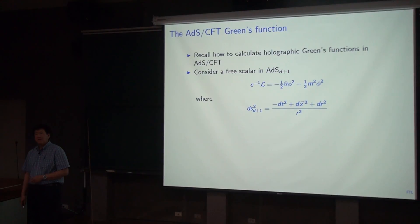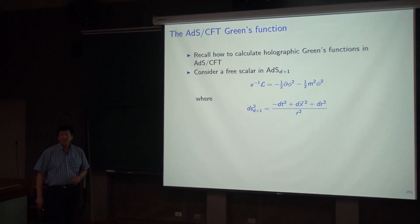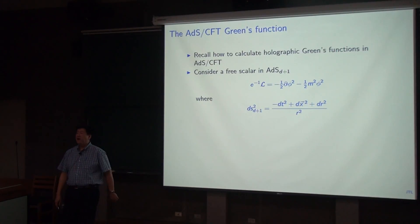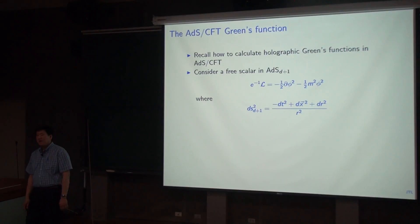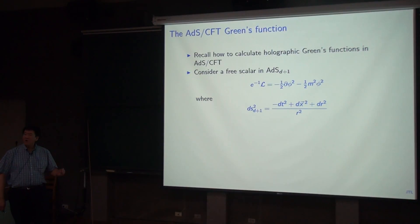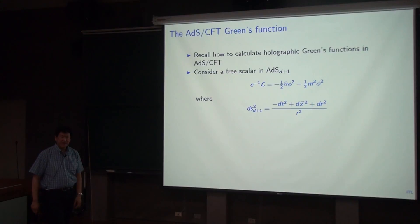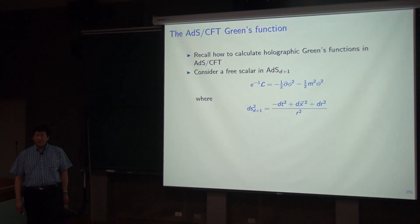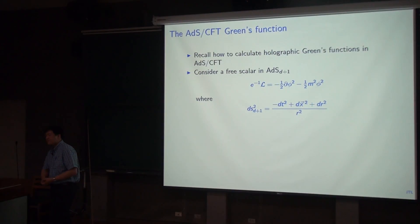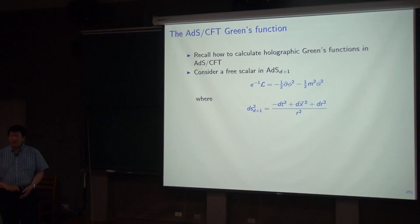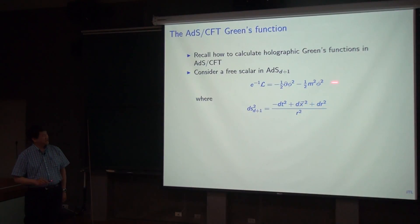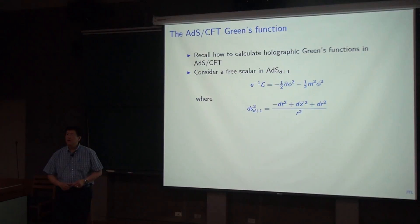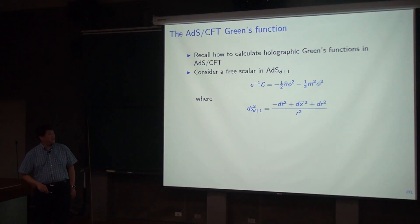Before telling you about the non-relativistic case, let me remind you how we use ADS/CFT to calculate two-point functions or boundary Green's functions. This is the simplest case of a scalar field dual to a scalar operator on the CFT side. In the bulk we write down a free spin-zero field, and we're going to do this in the Poincaré patch of ADS, which can be written in this fashion.